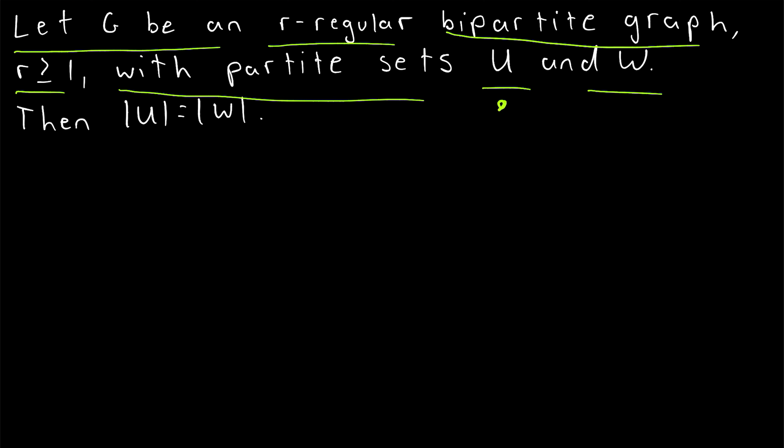So every edge of the graph joins a vertex in U to a vertex in W.